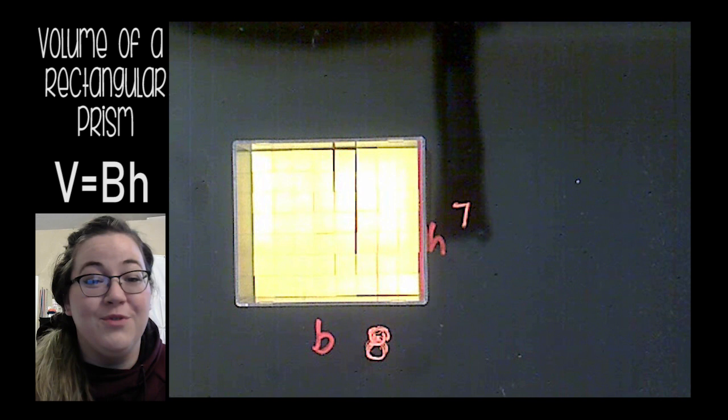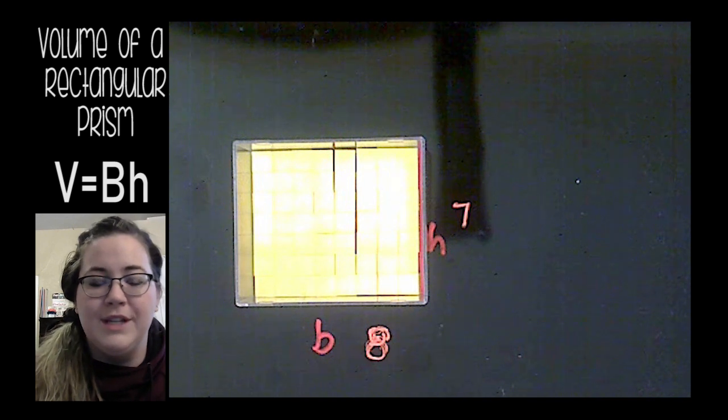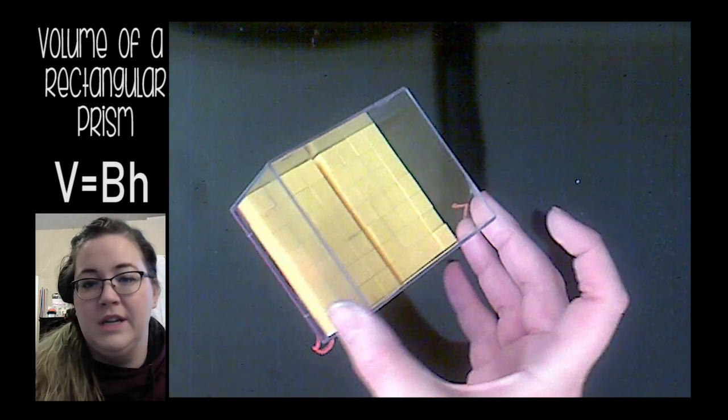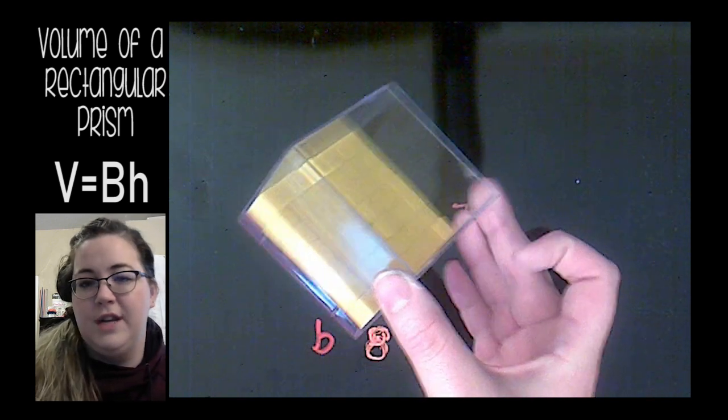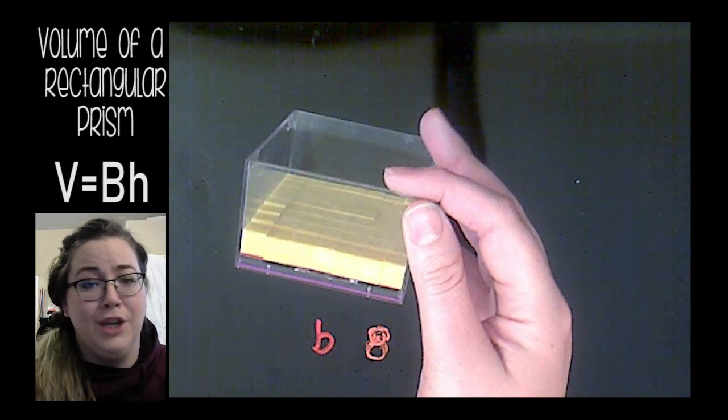That's how you find the area of a rectangle, but what about the volume of a rectangular prism? Well, a rectangular prism is just a 3D rectangle. All we need to do is continue our height. We're going to add several layers to our rectangular prism to see how many cubes it's going to take.